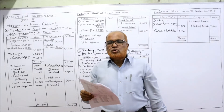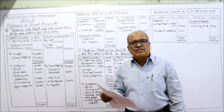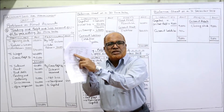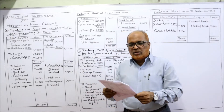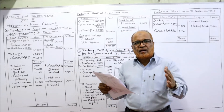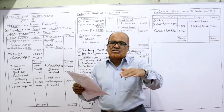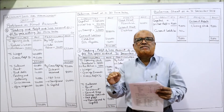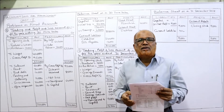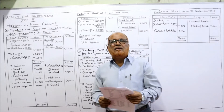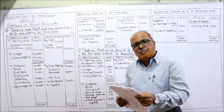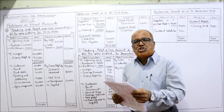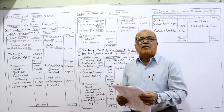Now one by one I'll explain. Opening stock — trading account debit side. Purchases — trading account debit side. Wages — trading account debit side. Sales return — deducted from sales on the credit side of the trading account. Salaries — profit and loss account debit side. Rent — P&L account debit side. Bad debts — P&L account debit side. Printing and stationery — P&L account debit side.